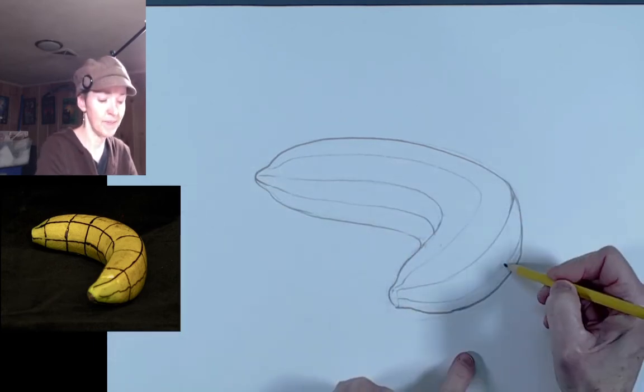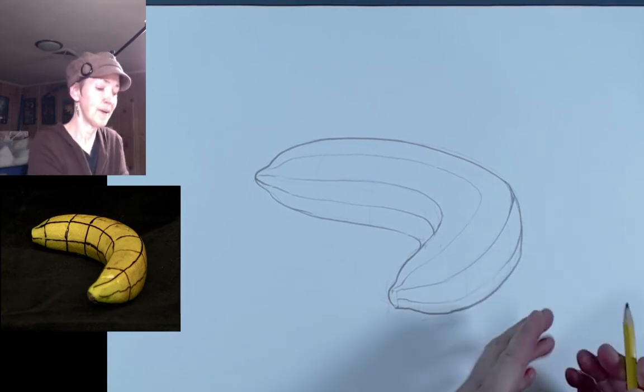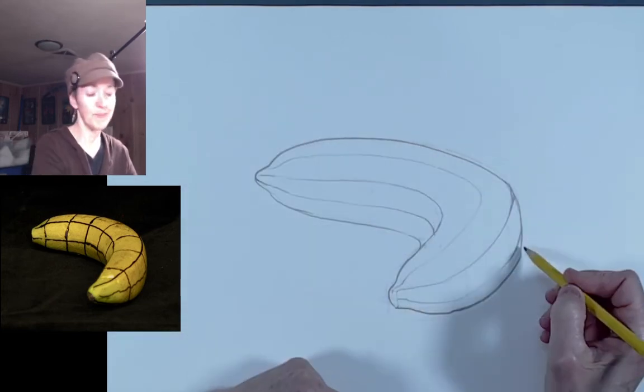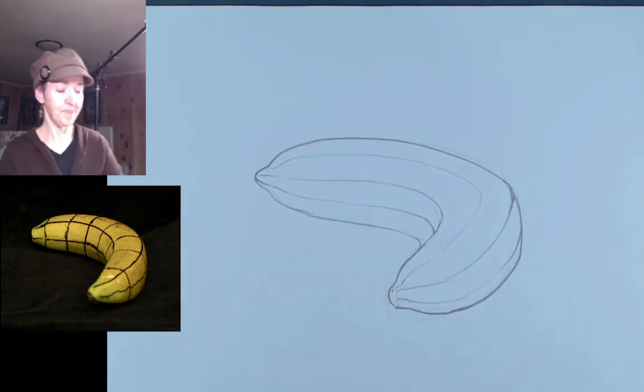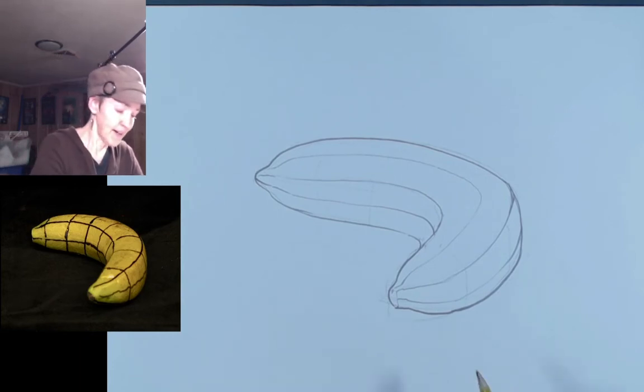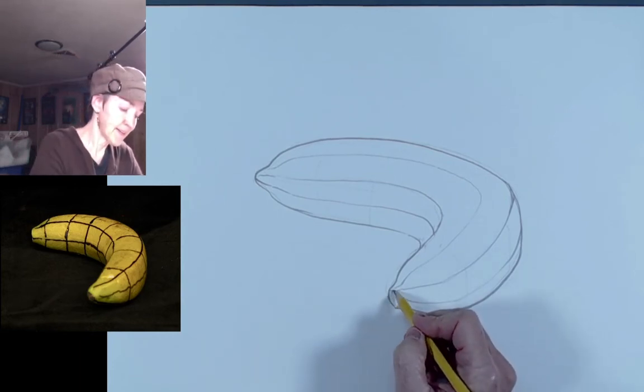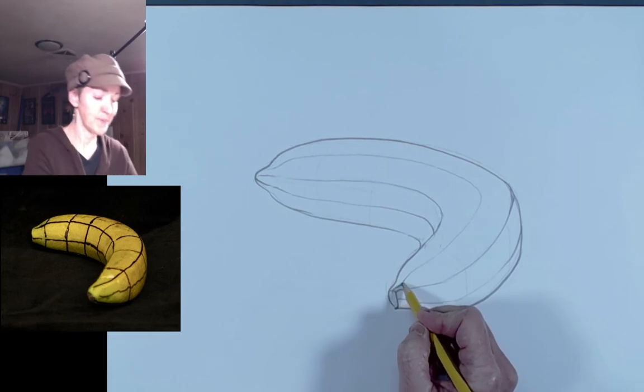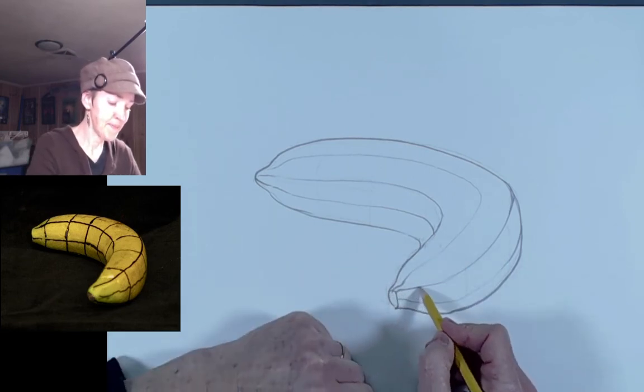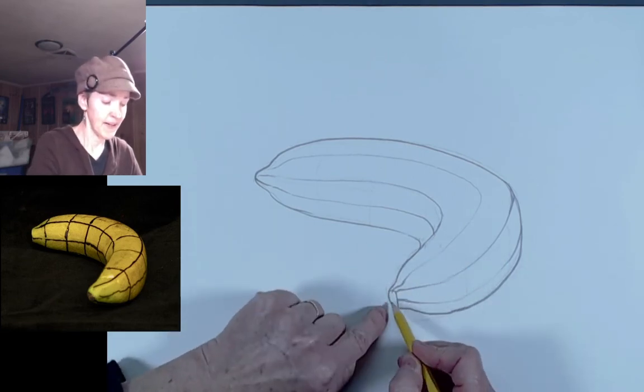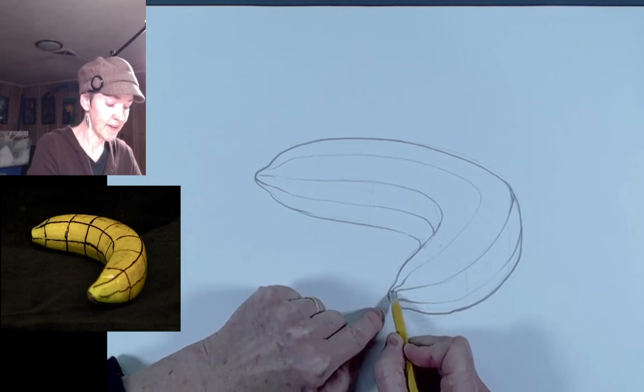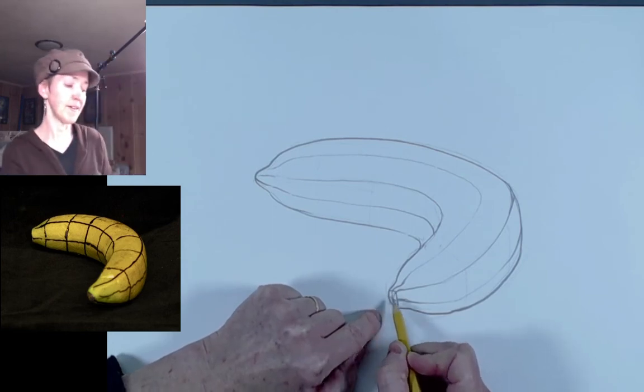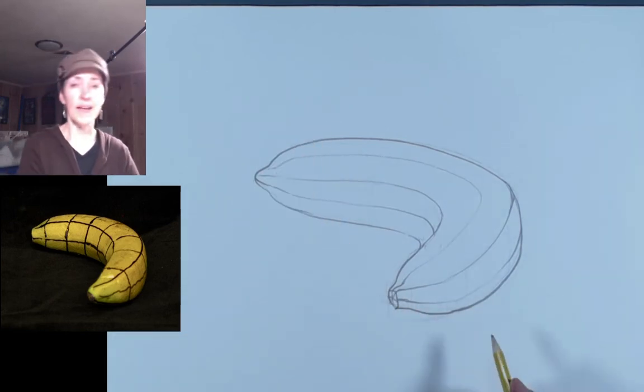So here as I approach this edge, I want to make sure it really feels like it's going to continue around behind there. You could even draw it transparently to start with if it helps you. Okay, I'm going to also maybe darken this a little bit because I'm imagining that sort of like where the banana was broken off the stem. And there might be a more abrupt kind of angle change there that we can bring our cross contours to meet at that point.